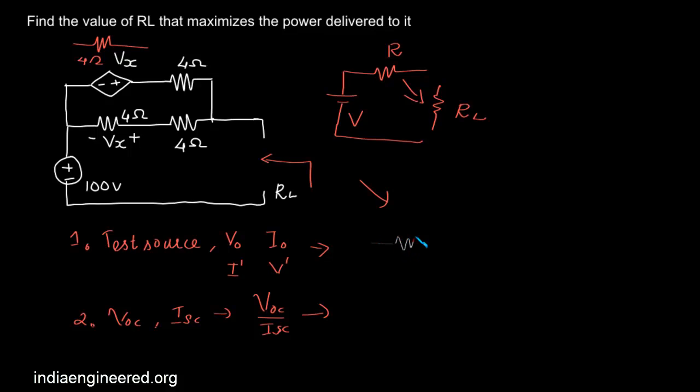We have the 4 ohm, the other 4 ohm. We have to find out the equivalent resistance here where all the resistances are 4 ohms.